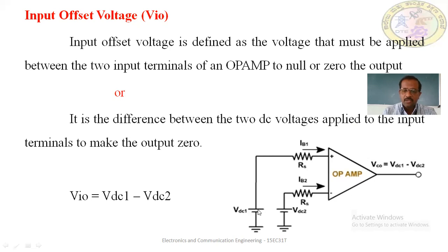If you apply VDC1 and VDC2 and take their difference, you get the input offset voltage — the voltage needed to bring the output to zero.